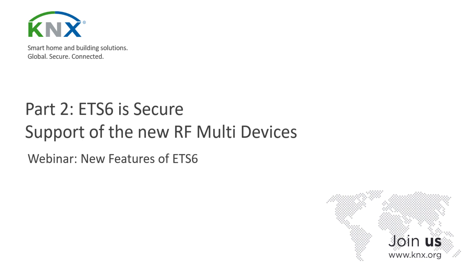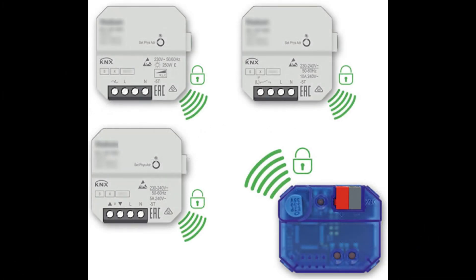The last major system extension supported by ETS 6 Professional is RF Multi — the new generation of KNX RF devices. KNX RF Multi is a highly reliable and robust wireless protocol for building control applications. It supports frequency agility using 5 different frequencies, repeaters, fast and slow modes, listen-before-talk, and fast acknowledge from up to 64 devices per domain.